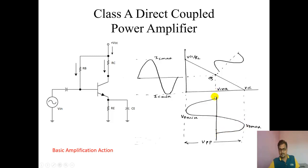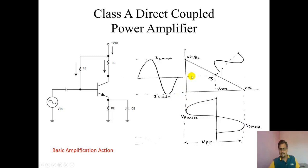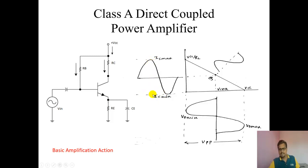The output voltage will come back to its original Q position, then go to minimum, and again return to the original position. So minimum output voltage is 0 and maximum output voltage is VCC. For current, if this is the ICQ line, current will increase to a maximum of twice ICQ — so IC max minus IC minimum equals twice ICQ.